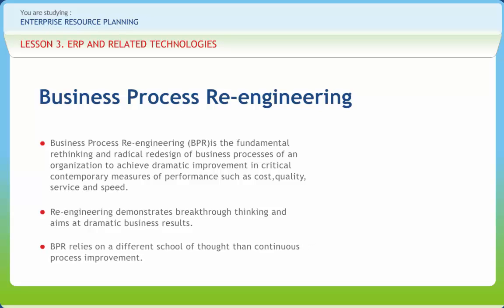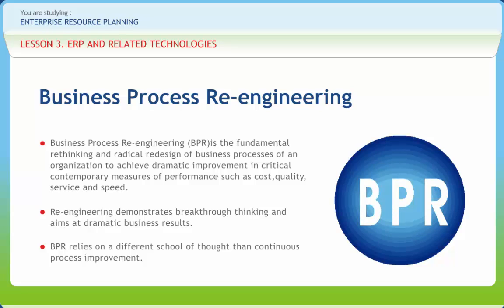BPR relies on a different school of thought than continuous process improvement. The major characteristics of BPR are cross-functional orientation, process innovation, customer focus, clean slate, and radical change in the organization's business processes by using ERP systems. BPR is more of a cross-functional perspective. The objective is to piece together the fragmented pieces of business processes. A process is a specific ordering of work activities across time and place, with a beginning and an end, and clearly identified inputs and outputs.